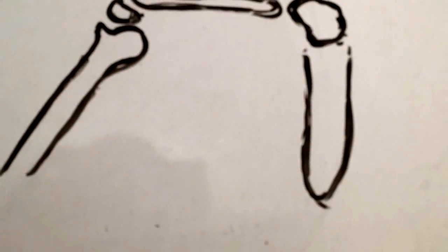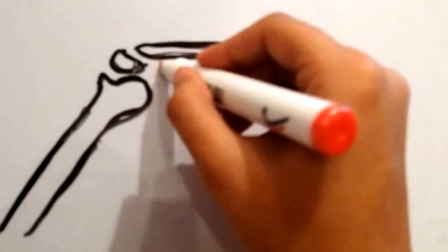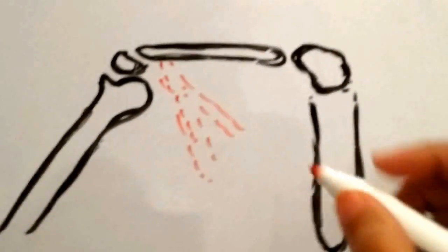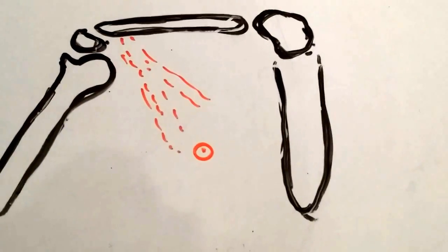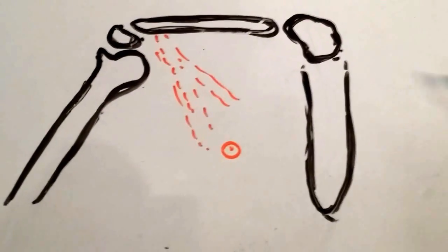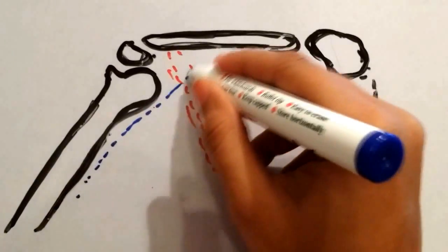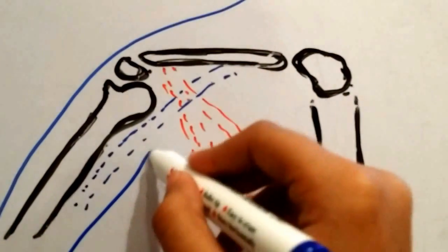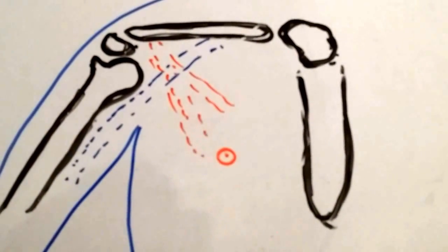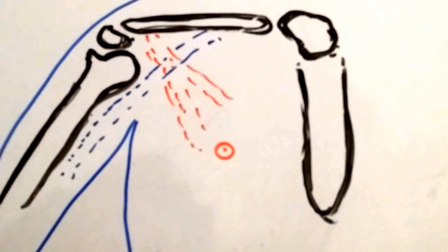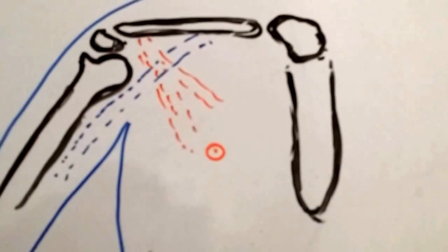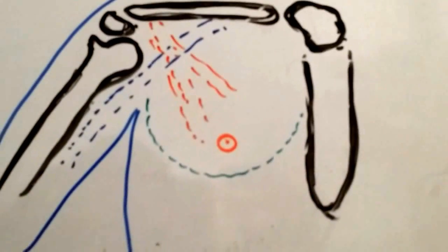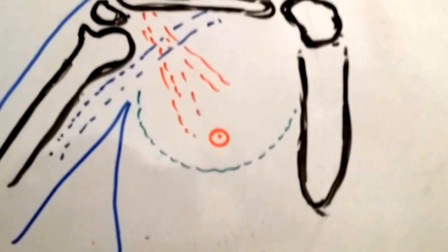The lymph nodes in the breast are actually commonly described in relationship to two structures. One of them is the pectoralis minor muscle, which I'm drawing out here, along with the nipple. The second structure is the axillary vein. Lymph nodes in the breast are very important to know because they're most commonly involved in carcinoma of the breast.